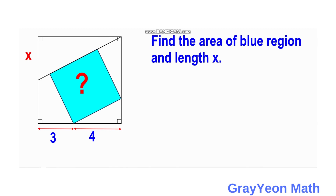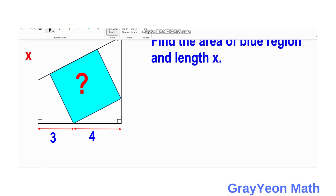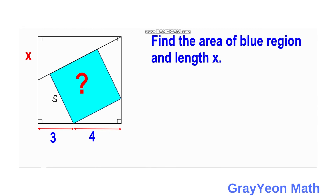First, we need to label the side of this square as s, and we focus on this small right triangle here and label this leg as t.